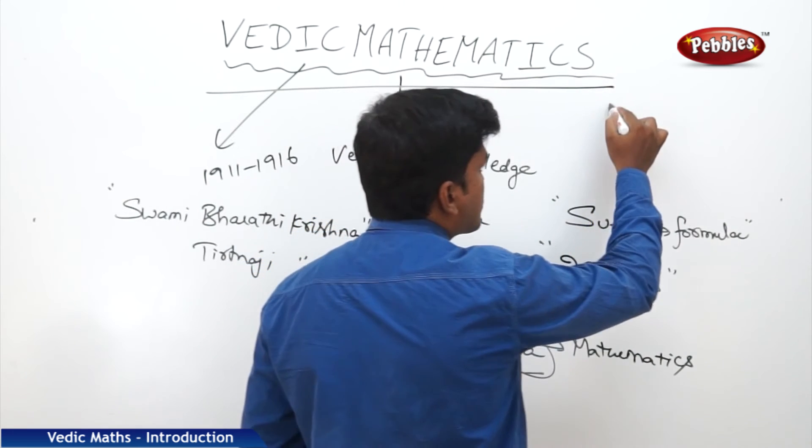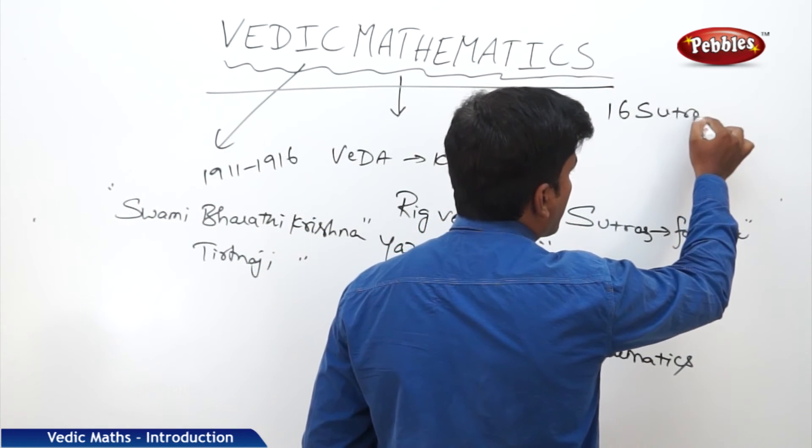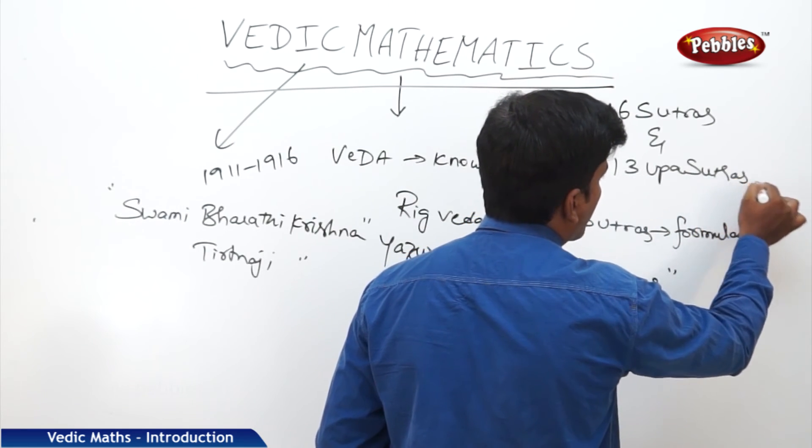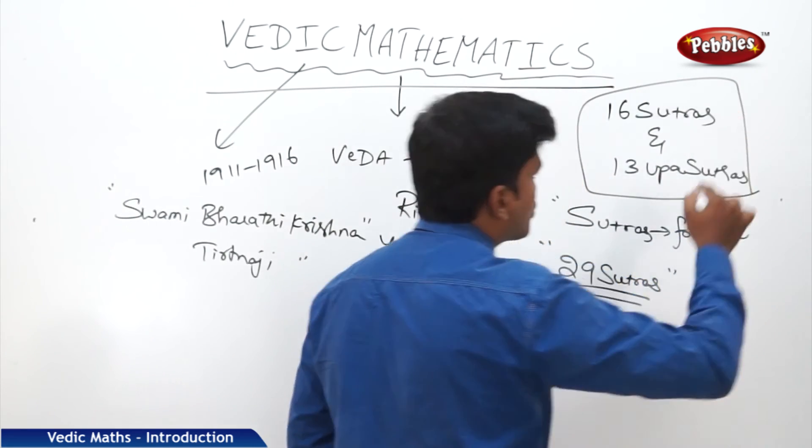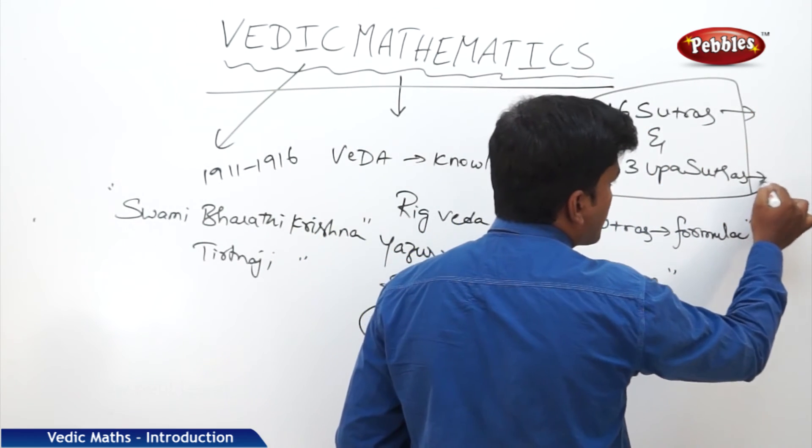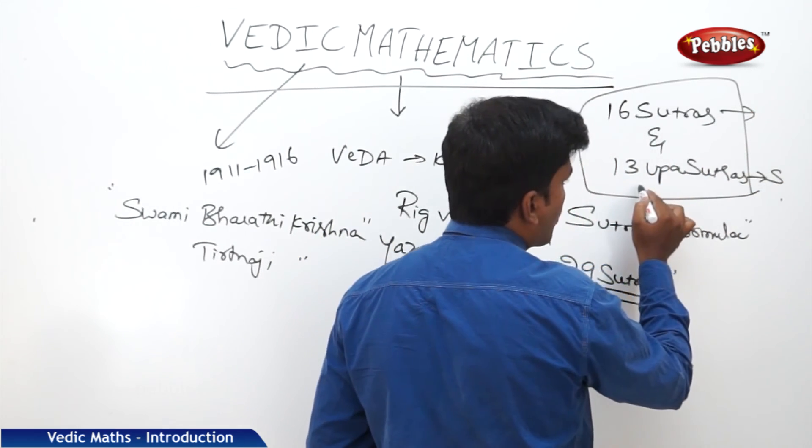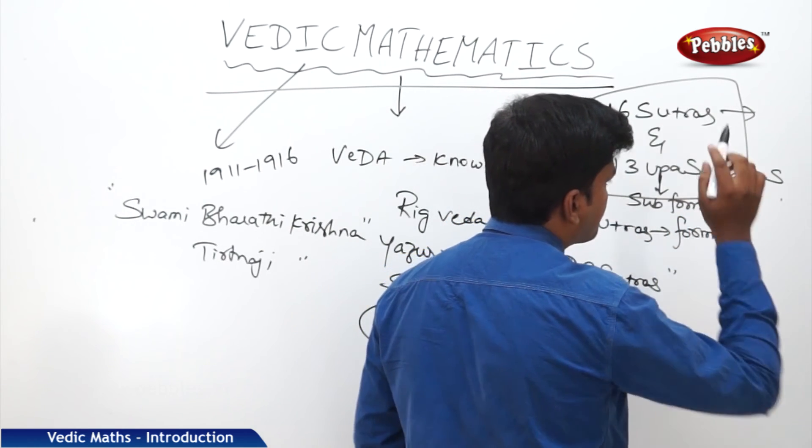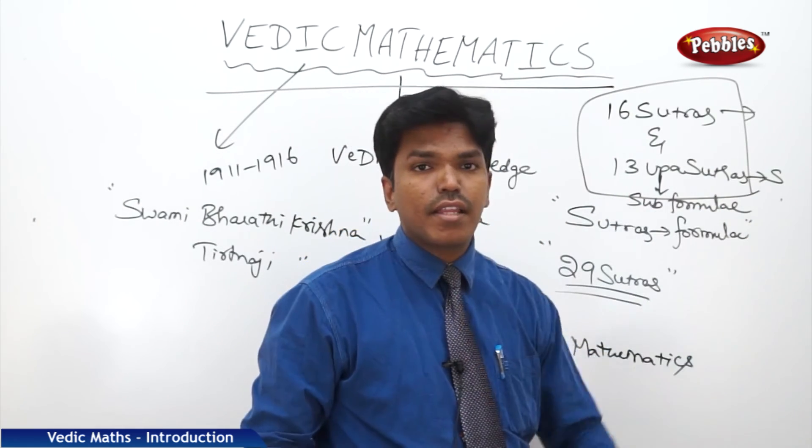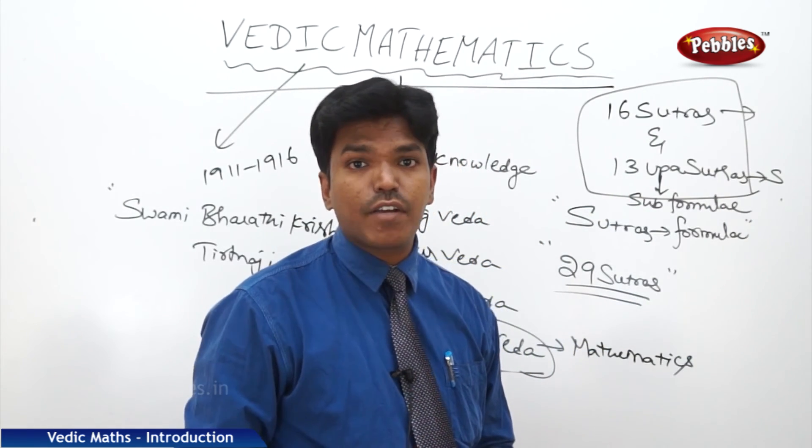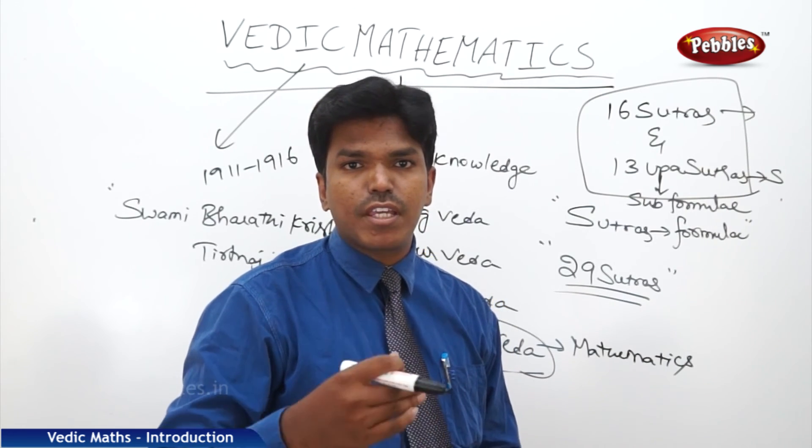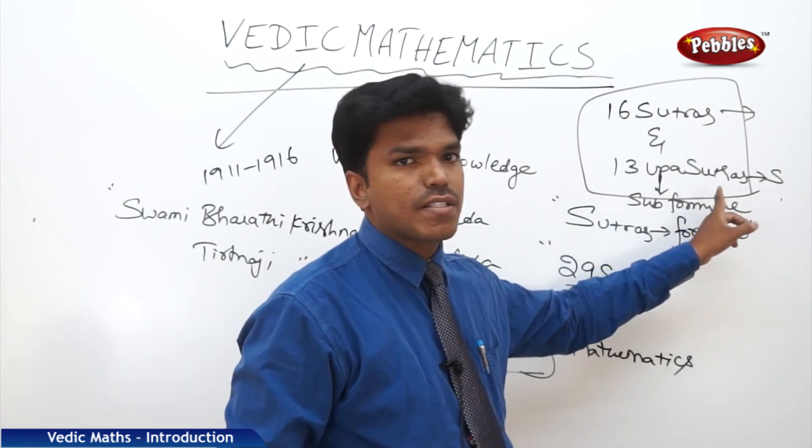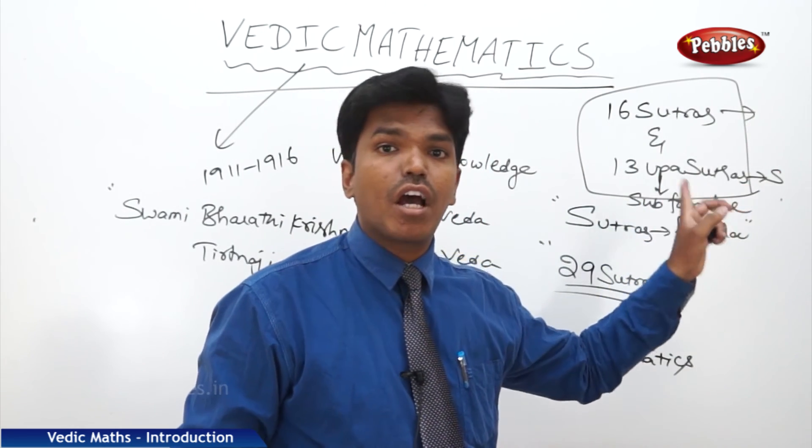Now see here. There are 16 sutras and 13 upasutras. Sutras means formulae and upasutras means subformulae. Like that, subformulae is nothing but the corollary, just like we have in mathematics, the corollary after the theorem. Similarly, we have 16 sutras and 13 upasutras, that means 16 formulae and 13 subformulae or corollary.